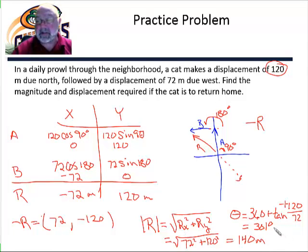I have this written down here. It's a little bit messy. So I'm going to bring it over here and say negative R is equal to 140 meters at an angle of 301 degrees. And that's my answer.